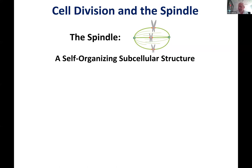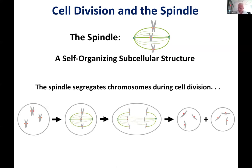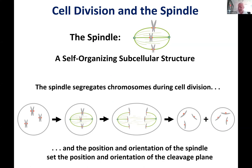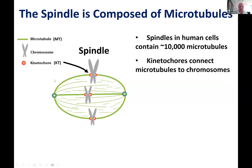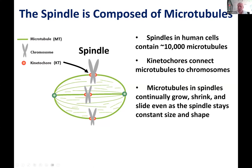The spindle is a self-ordering subcellular structure that segregates chromosomes during cell division and also positions the cleavage plane. The spindle is composed of microtubules. In human tissue culture cells, spindles contain roughly 10,000 microtubules. Certain microtubules contact a region on chromosomes called the kinetochore — these kinetochore microtubules are the ones which connect to chromosomes. Microtubules in spindles continue to grow, shrink, and slide, even as spindles stay a constant size and shape.